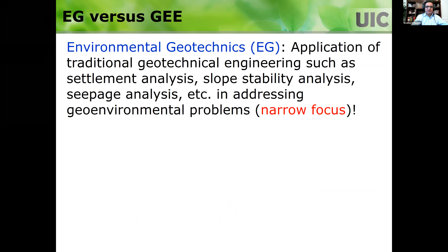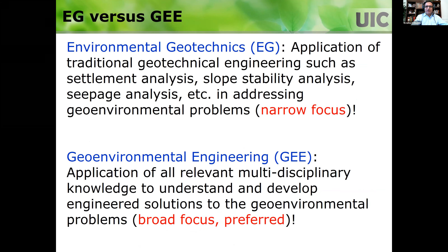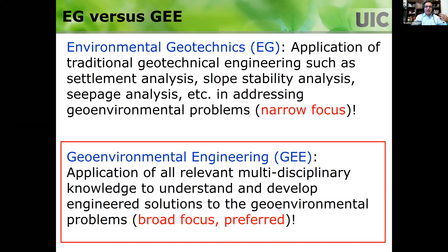There are two terms used to express this field. One is environmental geotechnics, and the other is geo-environmental engineering. Environmental geotechnics has a narrower focus — it's more about applying traditional geotechnical engineering to geo-environmental problems, such as slope stability and settlement. Geo-environmental engineering, on the other hand, is a broad field where you apply a multidisciplinary background to solve geo-environmental problems. I prefer the use of geo-environmental engineering because we have advanced so much in this field.